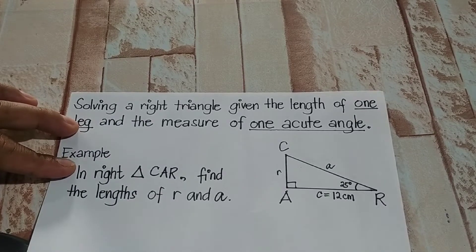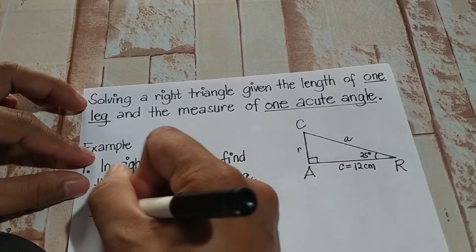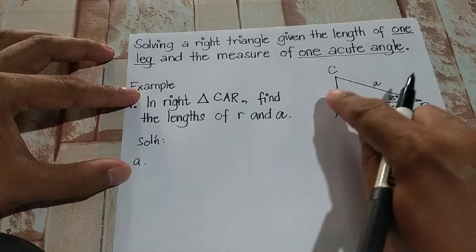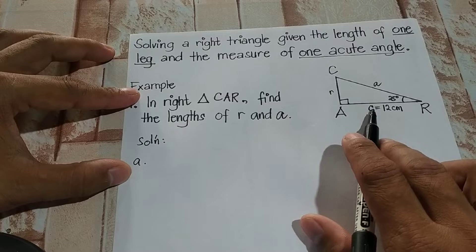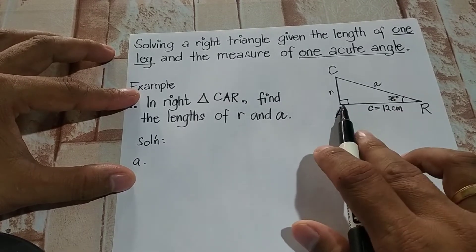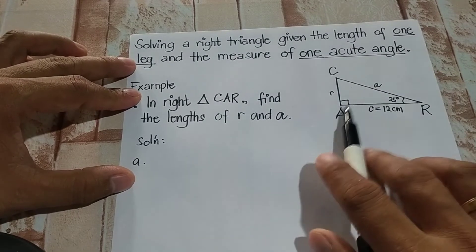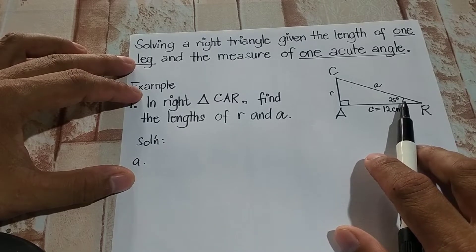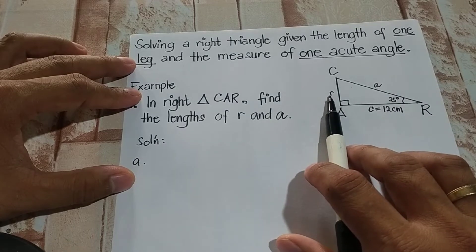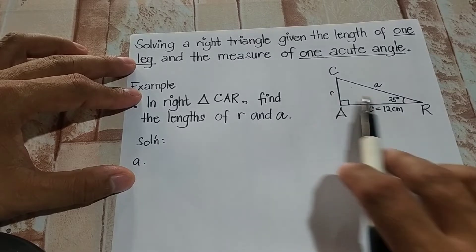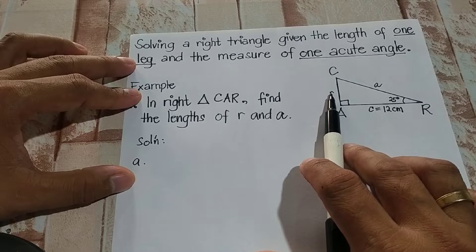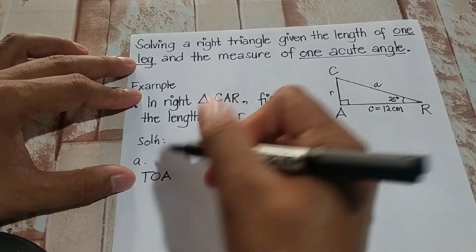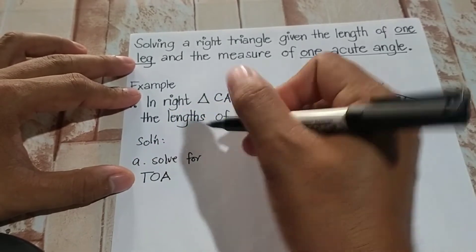How are we going to find that? Okay, solution one: let us find first the length of side R. With the given angle of 25 degrees and side C which is 12 — that is one leg of our right triangle — among the six trigonometric ratios, we have the angle, opposite over adjacent. So therefore, we will be using TOA to solve for side R.